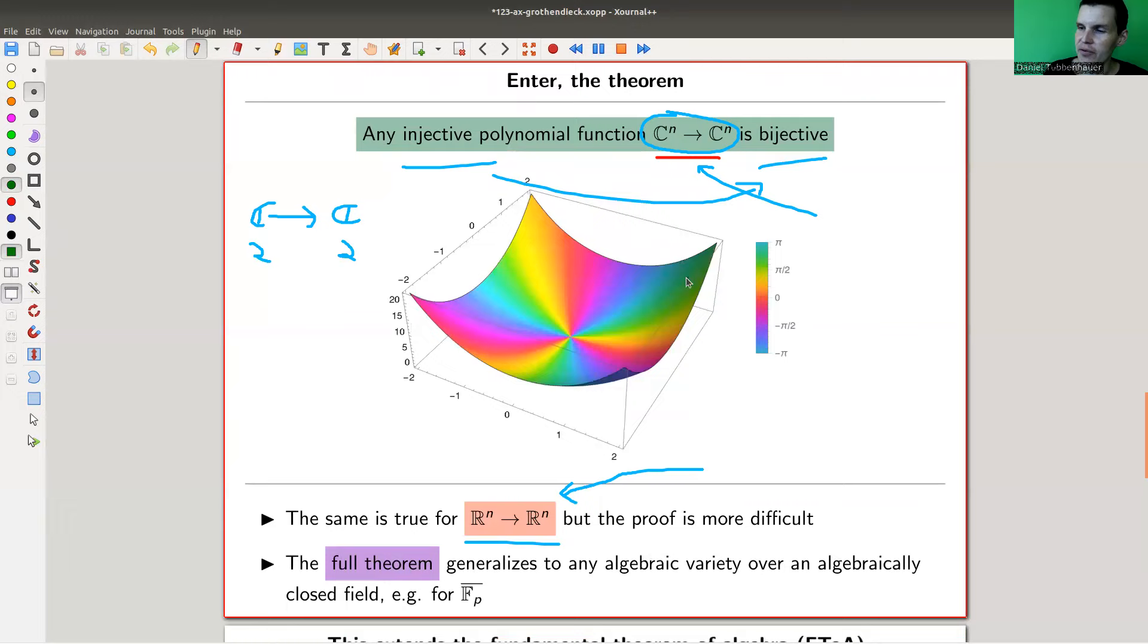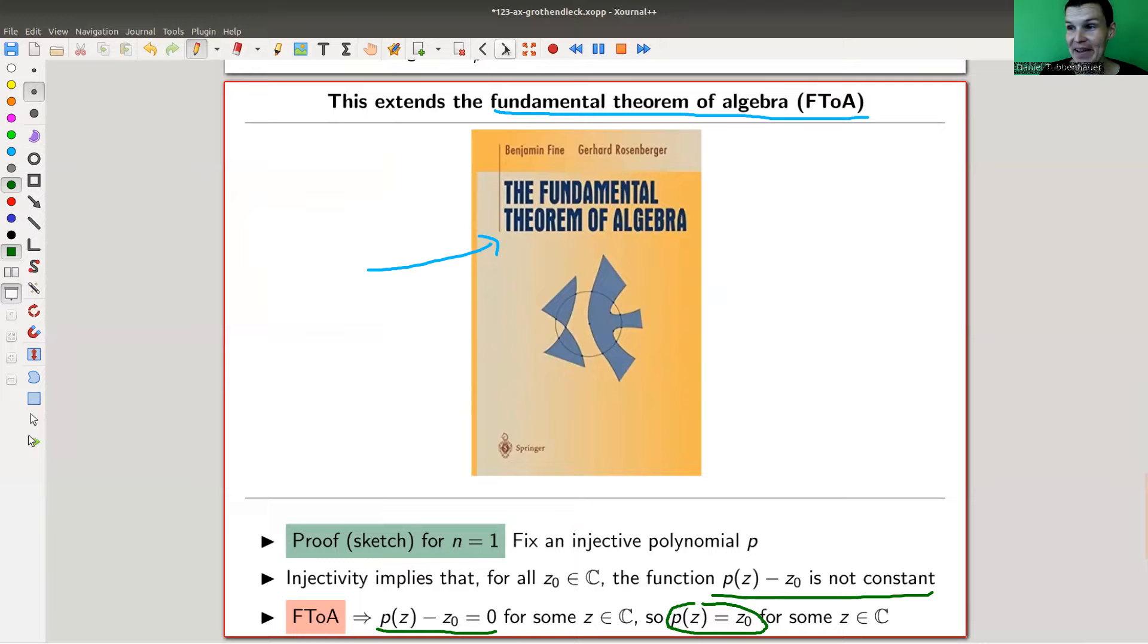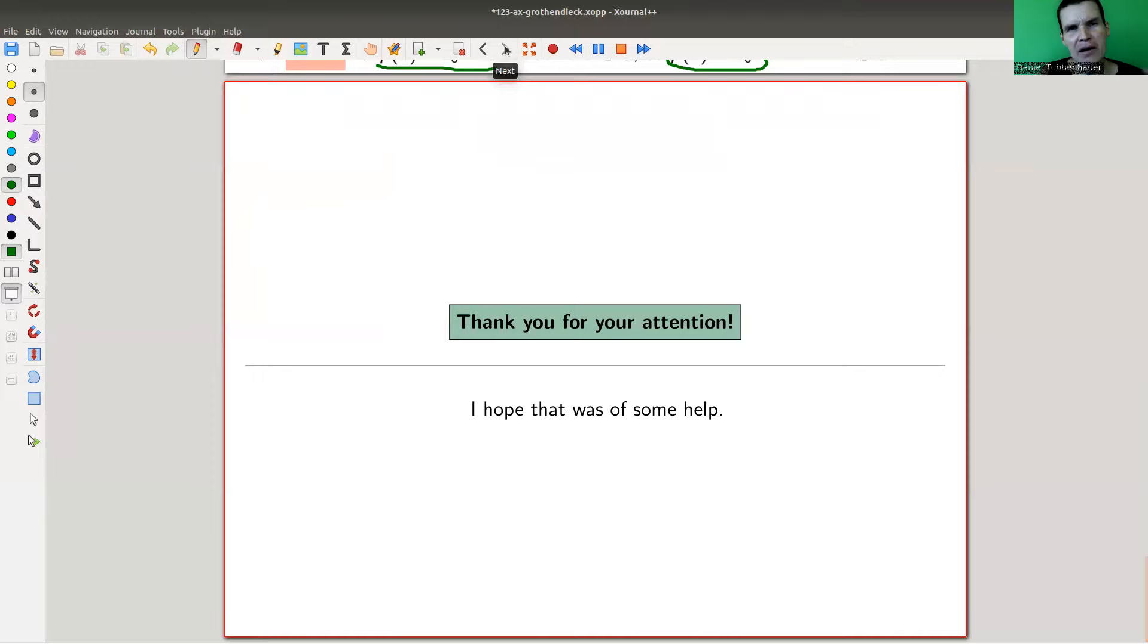So Ax, Grothendieck, and many other people got interested in it. Because in some sense, the theorem is a generalization, a higher dimensional version, or even an algebraic geometry version, if you want, of the really lovely and absolutely amazing fundamental theorem of algebra. Anyway, so that's the story for today. In some sense, the slogan is polynomials are easier than general function. Is it a surprise? Not really, I guess. But the theorem is still pretty remarkable. Anyway, I hope you enjoyed the video. And I also hope to see you next time.